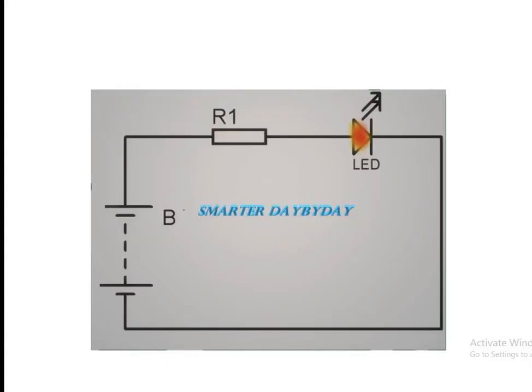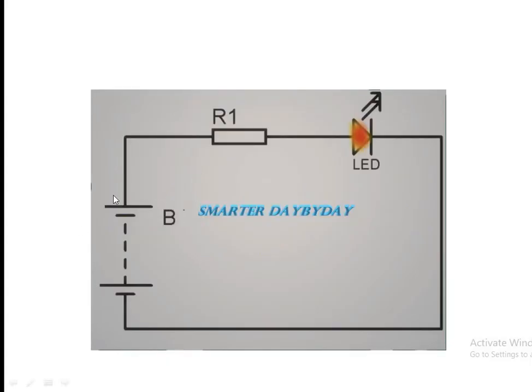The battery source is represented by this symbol. That line represents the positive and the smaller one represents the negative side. We will increase the number of lines if we have more plates in our battery.